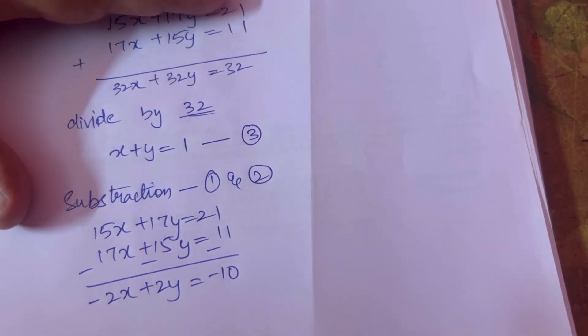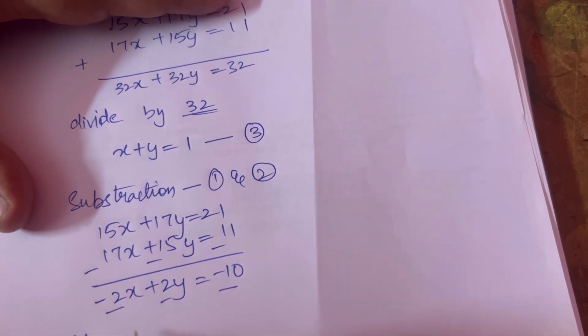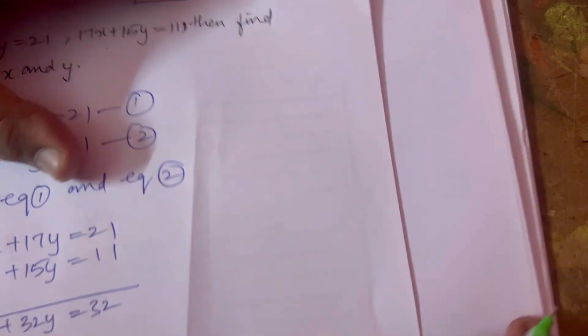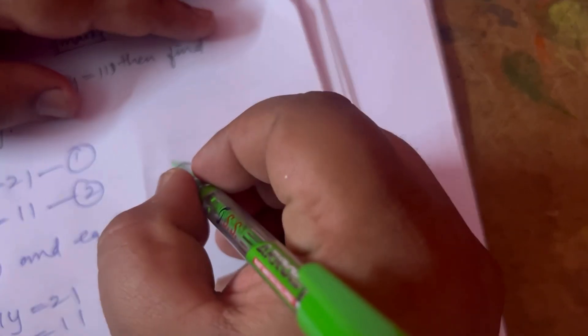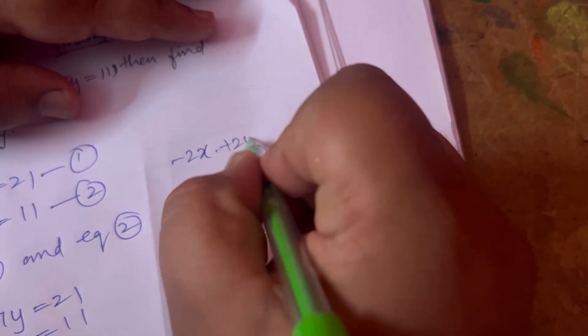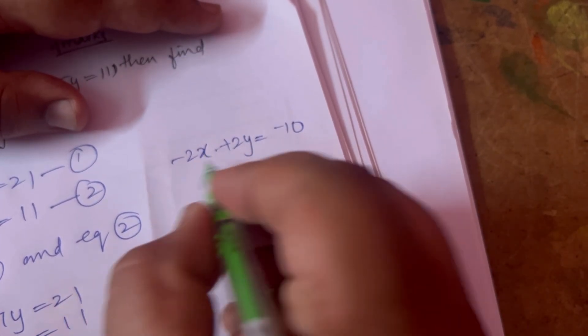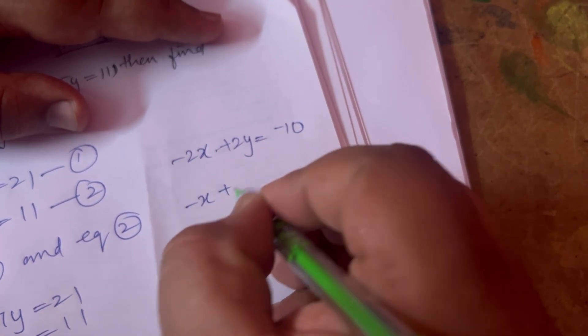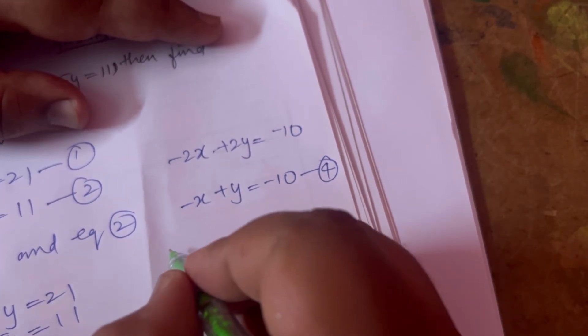We take 2 as common and divide by 2. So minus 2x plus 2y equals minus 10 — after dividing by 2, it becomes minus x plus y equals minus 5. This is equation 4.